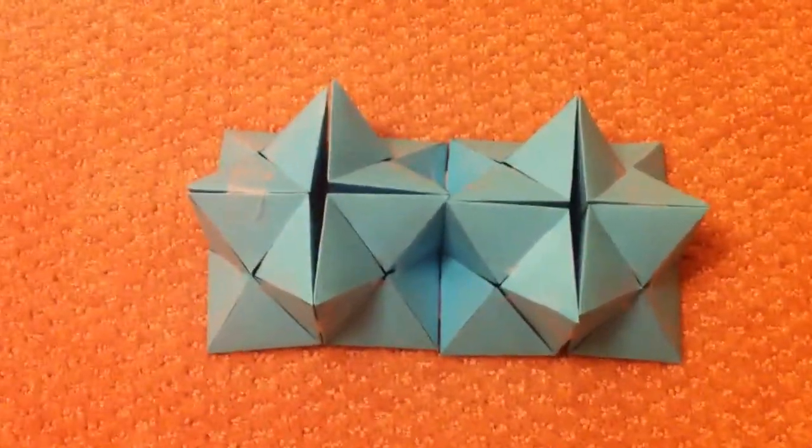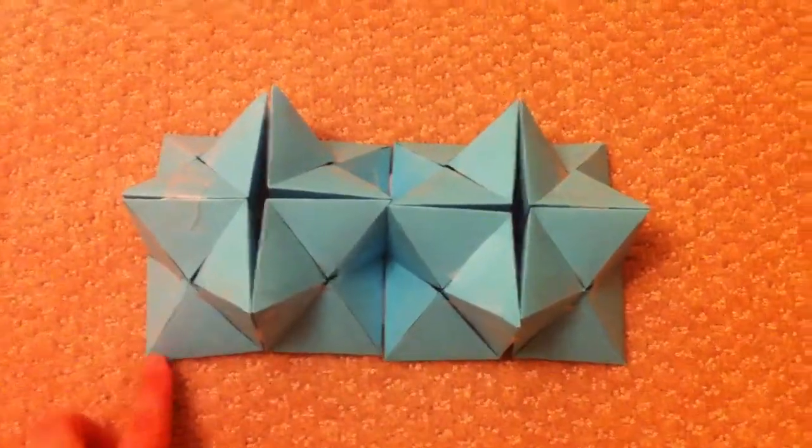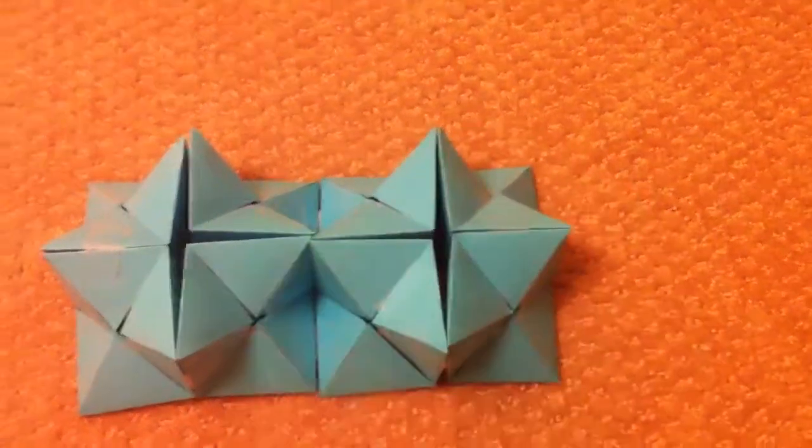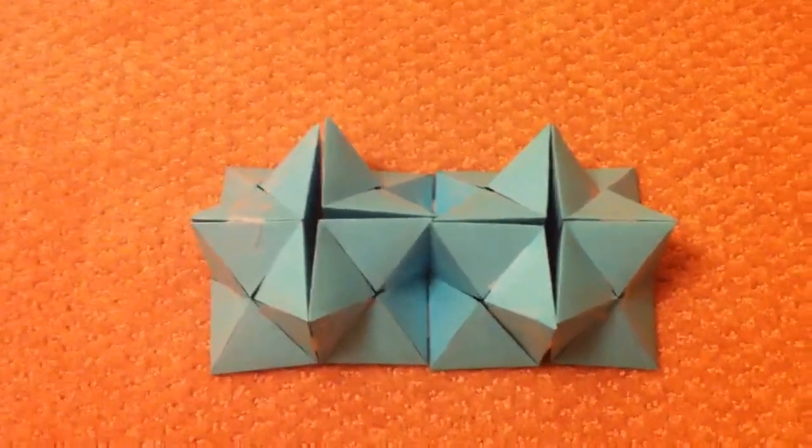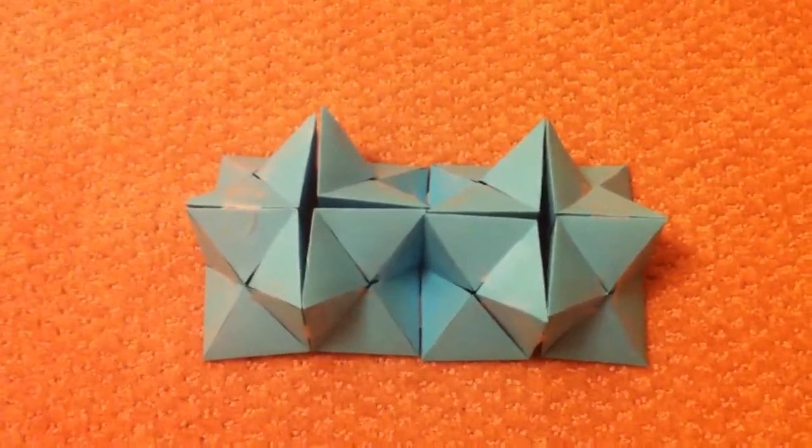Okay, so lay them down in this configuration where you've got kind of the low points of the cubelets there and on the edges. And then there's like the two plus signs in the middle. And then there's just eight places that we want to hinge.